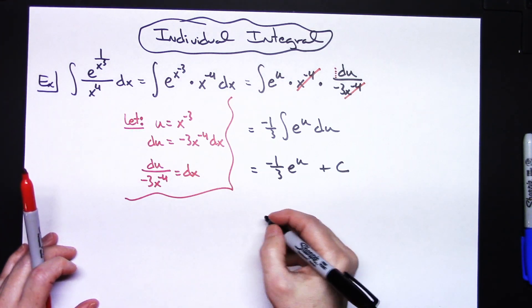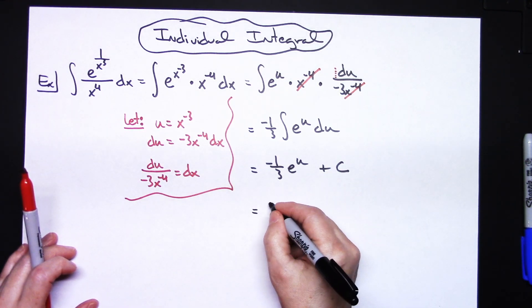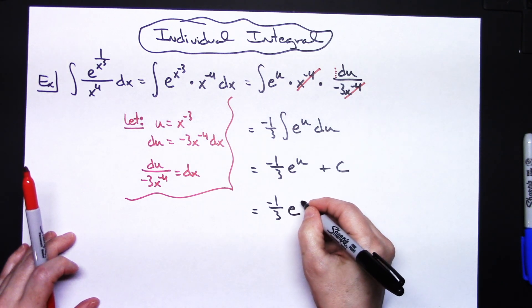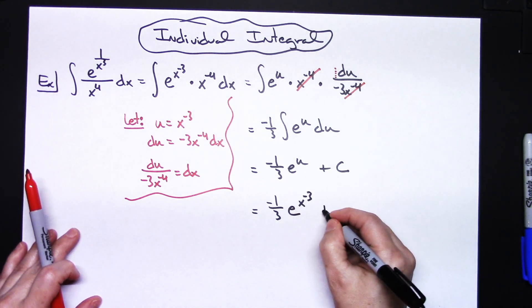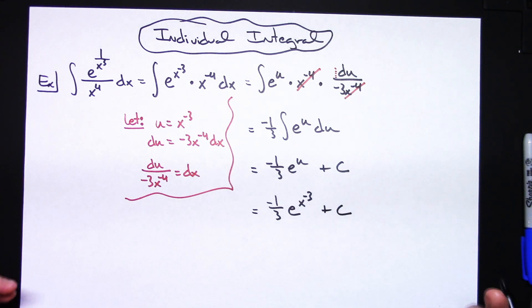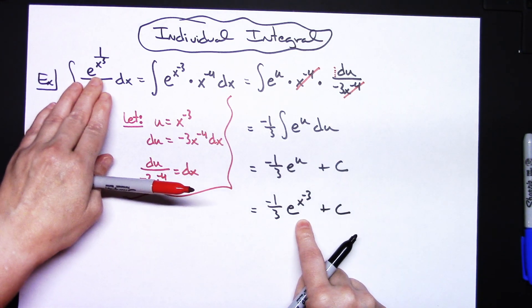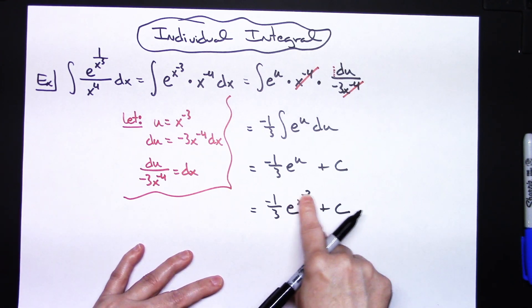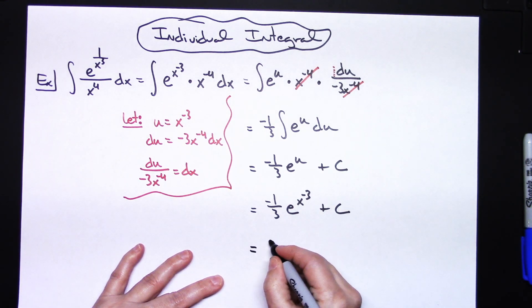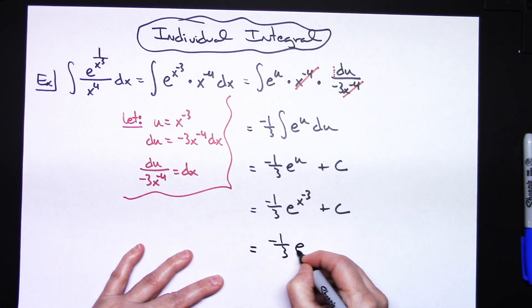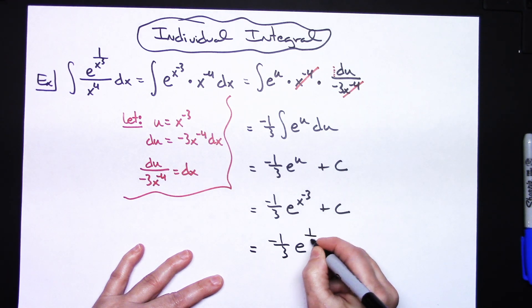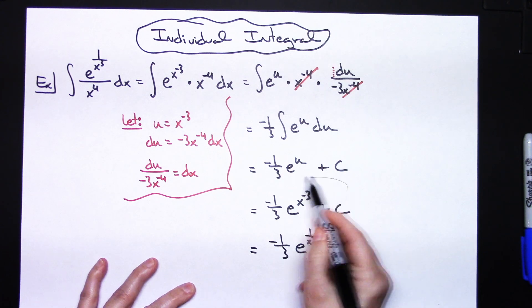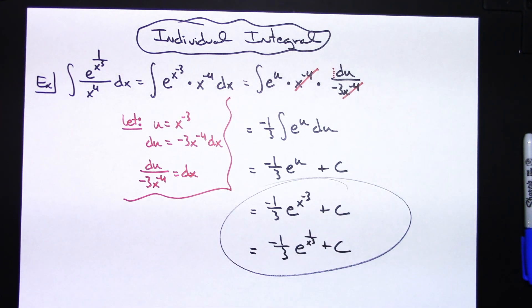Now I want to replace u with what it equals to get the answer back in terms of x, since my original problem was in terms of x. So that gives negative one-third e raised to x to the negative third plus C. There's nothing wrong with stopping there, but since you didn't have any negative exponents to begin with, you could change it back to negative one-third e raised to 1 over x cubed plus C. Both of those are equivalent answers.